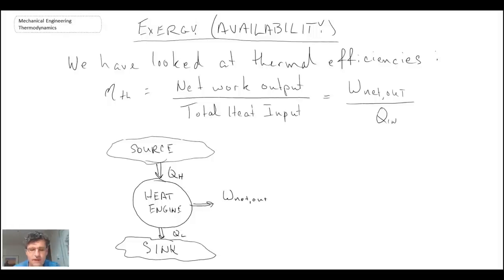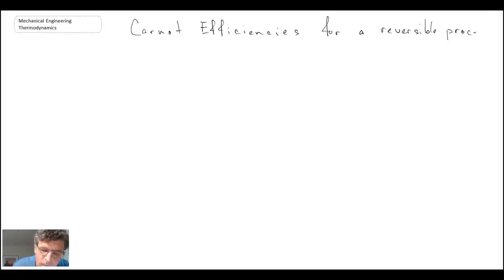We also talked about the Carnot efficiency. The Carnot efficiencies were for reversible processes. For the Carnot efficiency, we gave the symbol reversible after eta thermal in order to denote that this is for a reversible process. And we quantified the Carnot efficiency in terms of the temperature in Kelvin.